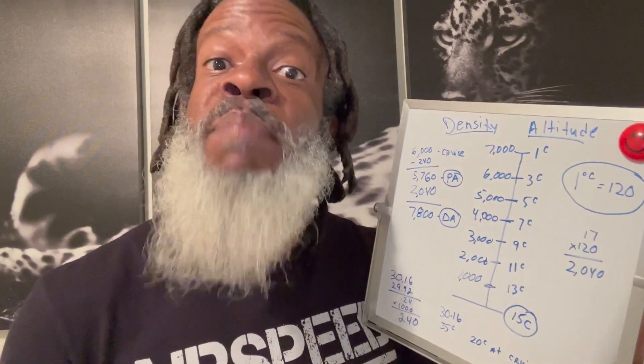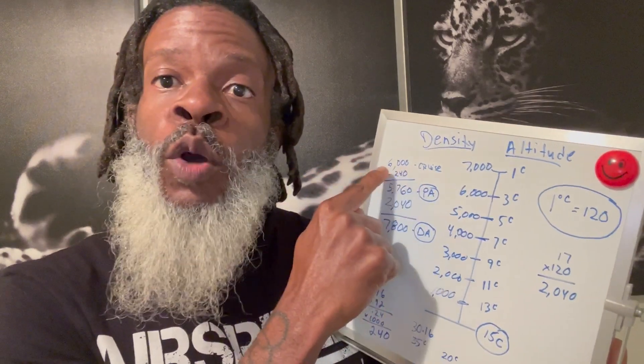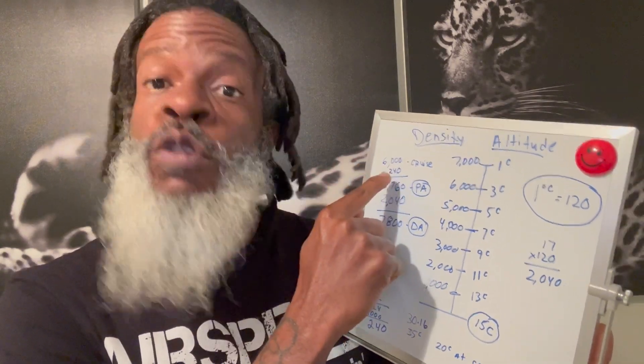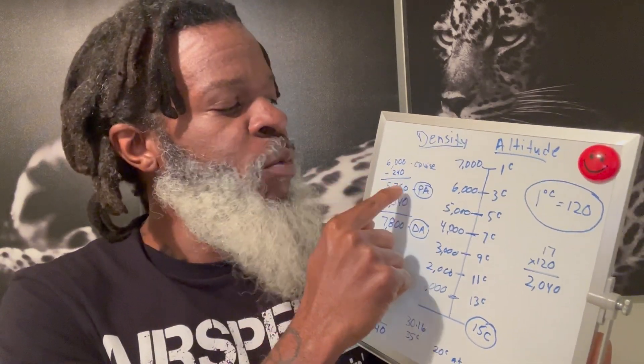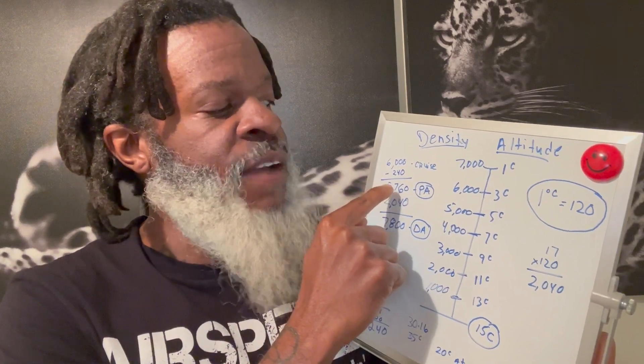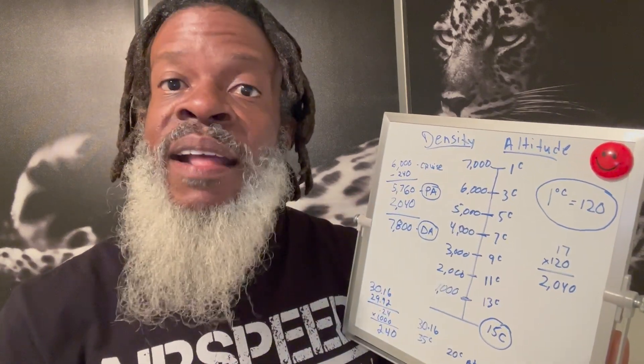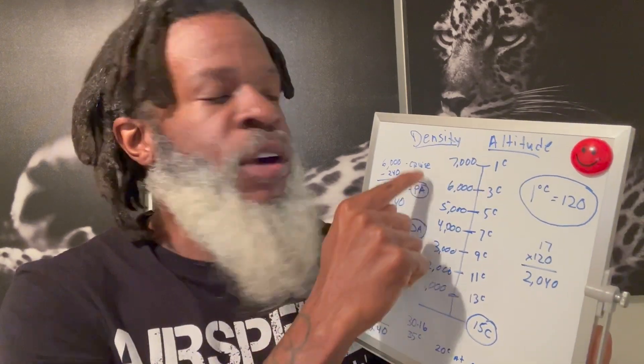For this flight we were planning, let's say we want to be at 6,000 feet cruising altitude. All we do is take our cruising altitude of 6,000 feet minus 240, and we get 5,760 feet. That's our pressure altitude.